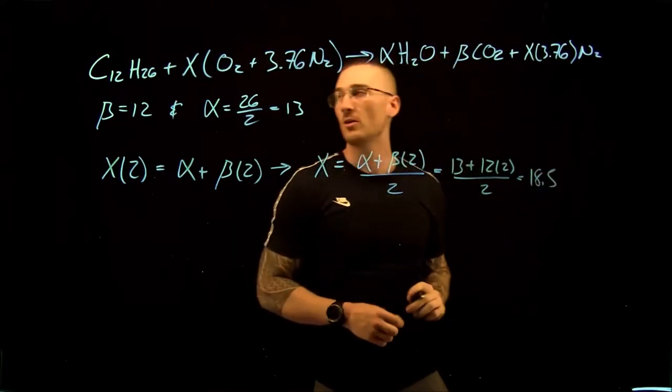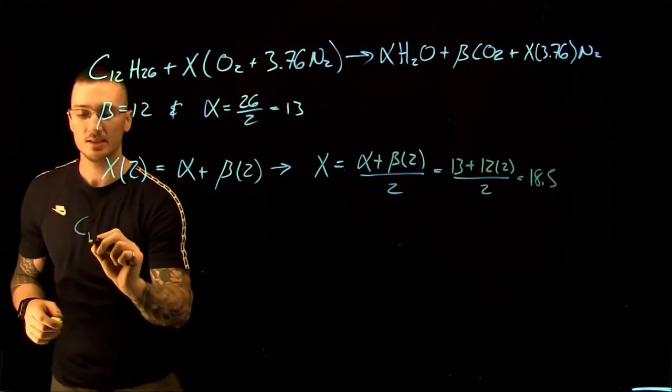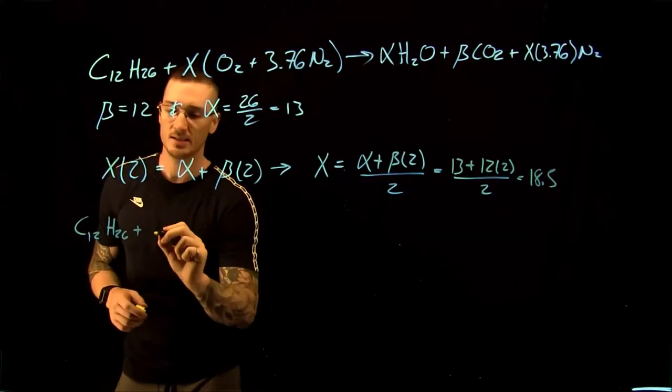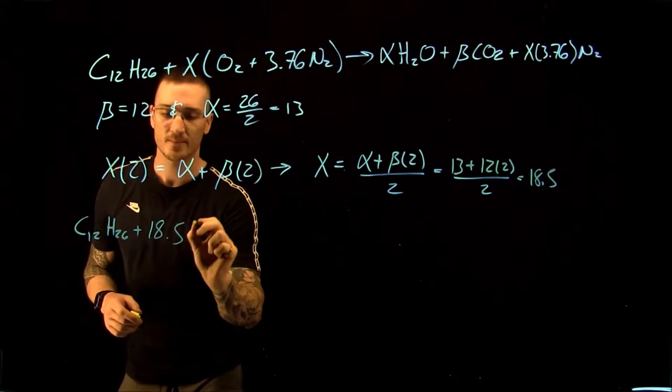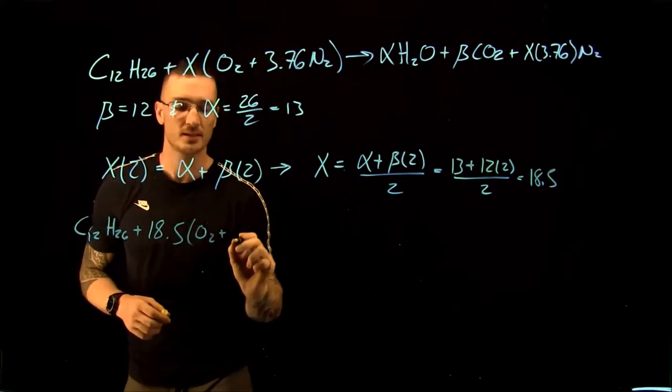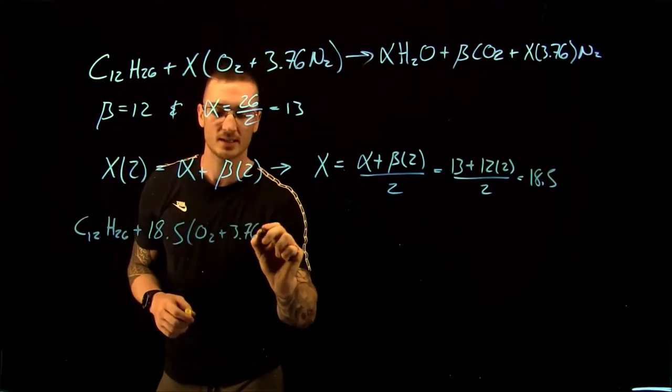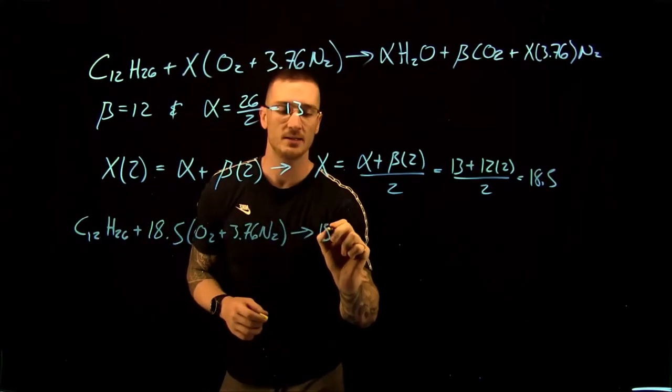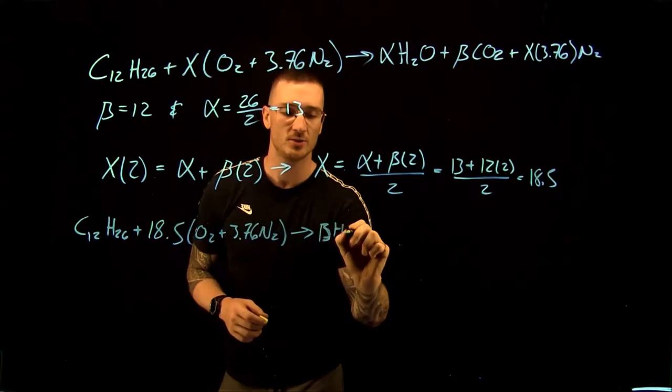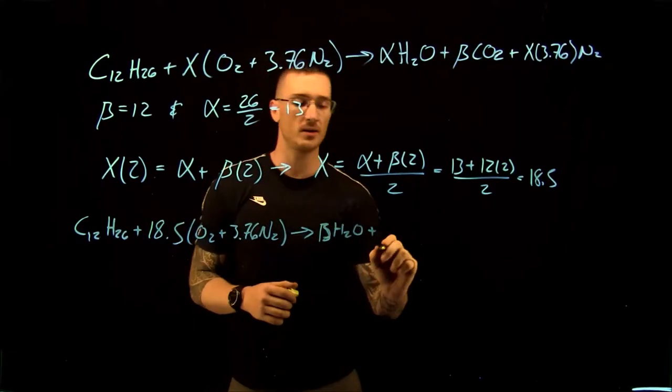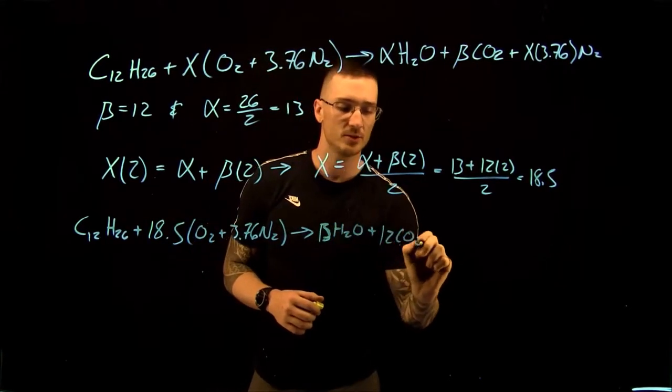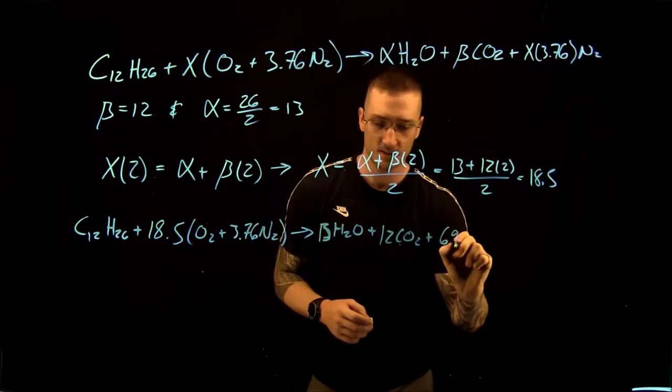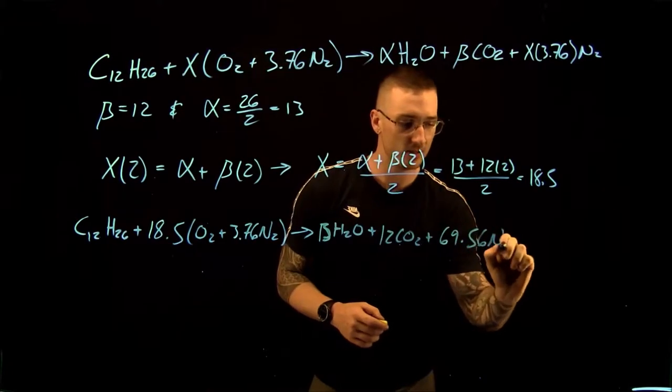So our balanced stoichiometric equation is C12H26 plus 18.5 O2 plus 3.76 N2 gives us 13 H2O plus 12 CO2 plus 69.56 N2.